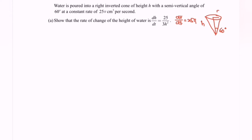The first step is to extract the info. One more thing we can add is the formula for the cone, where V equals πr²h over 3. Now referring to question A: show that the rate of change of the height of the water is dh/dt equals 25π over 3h².